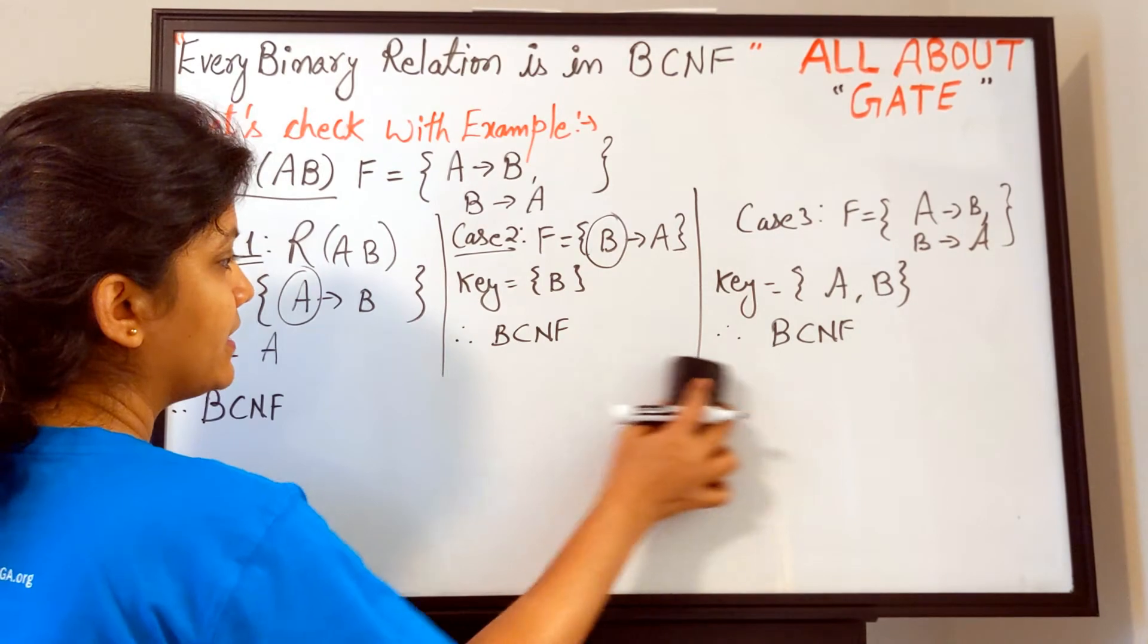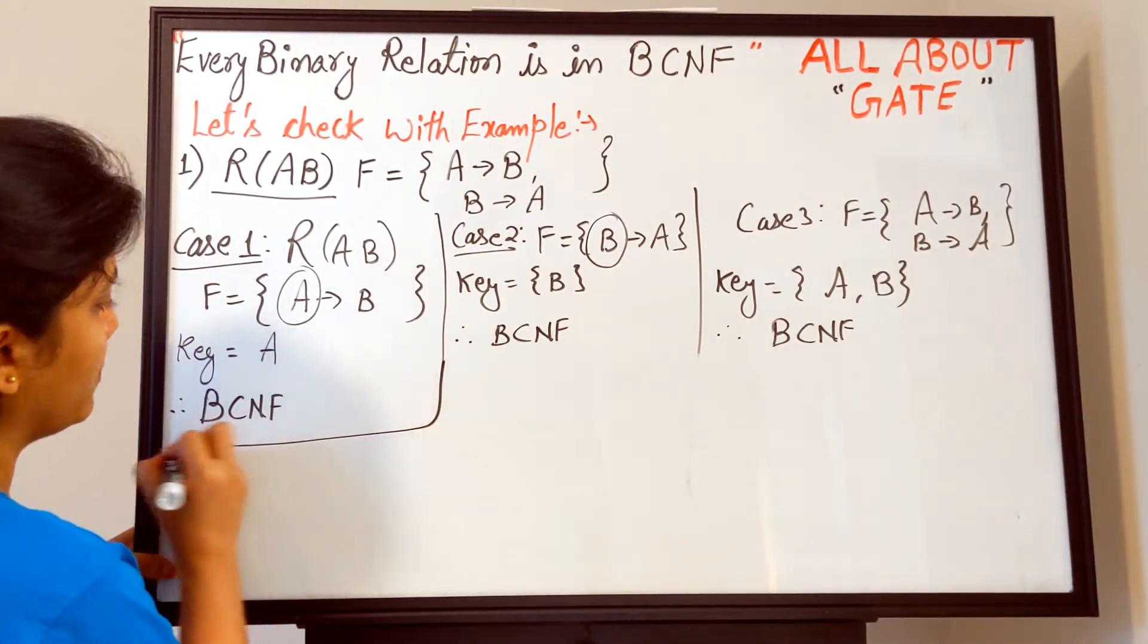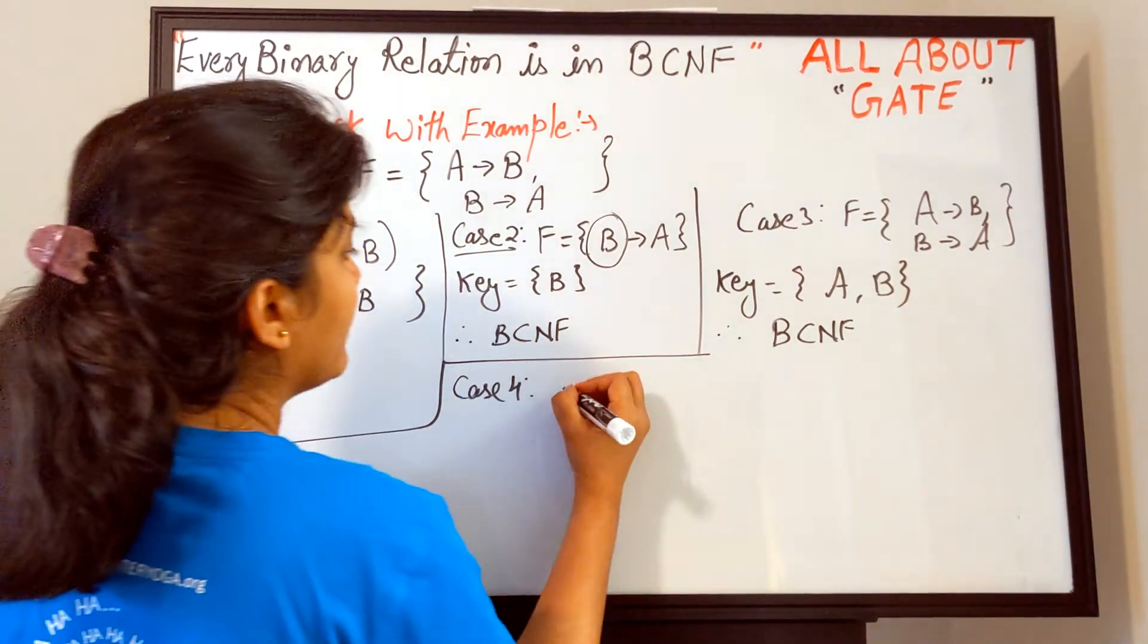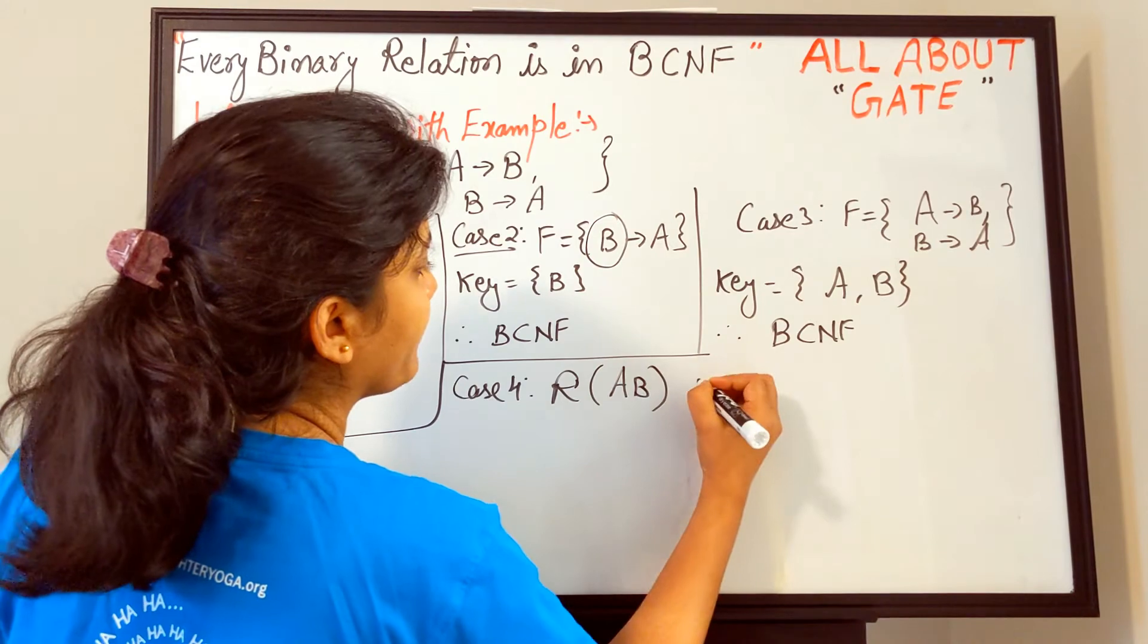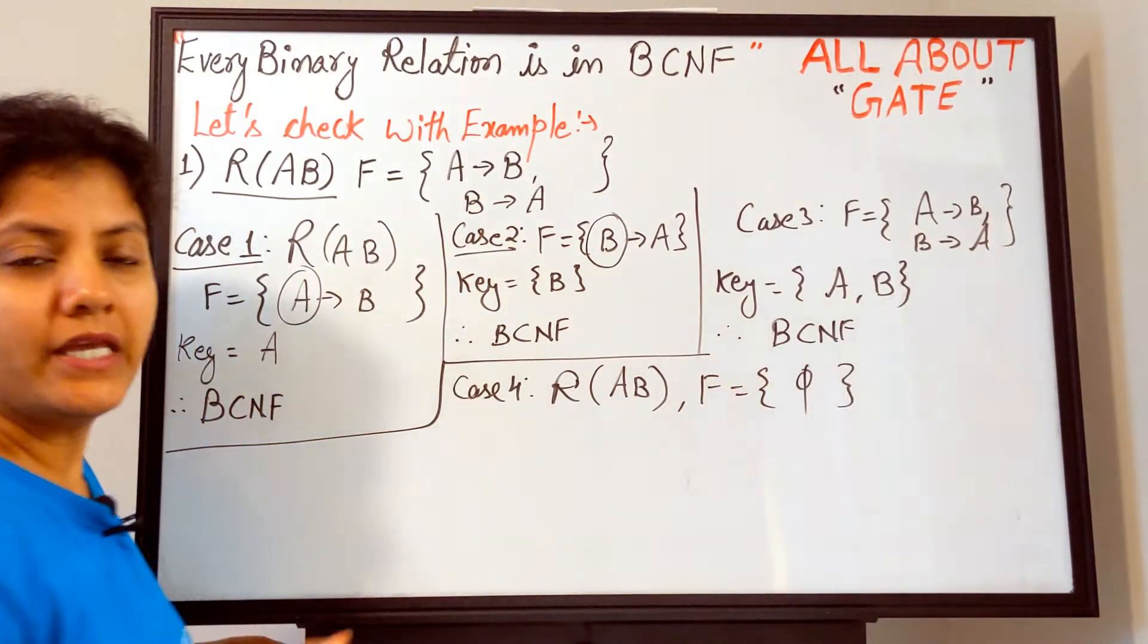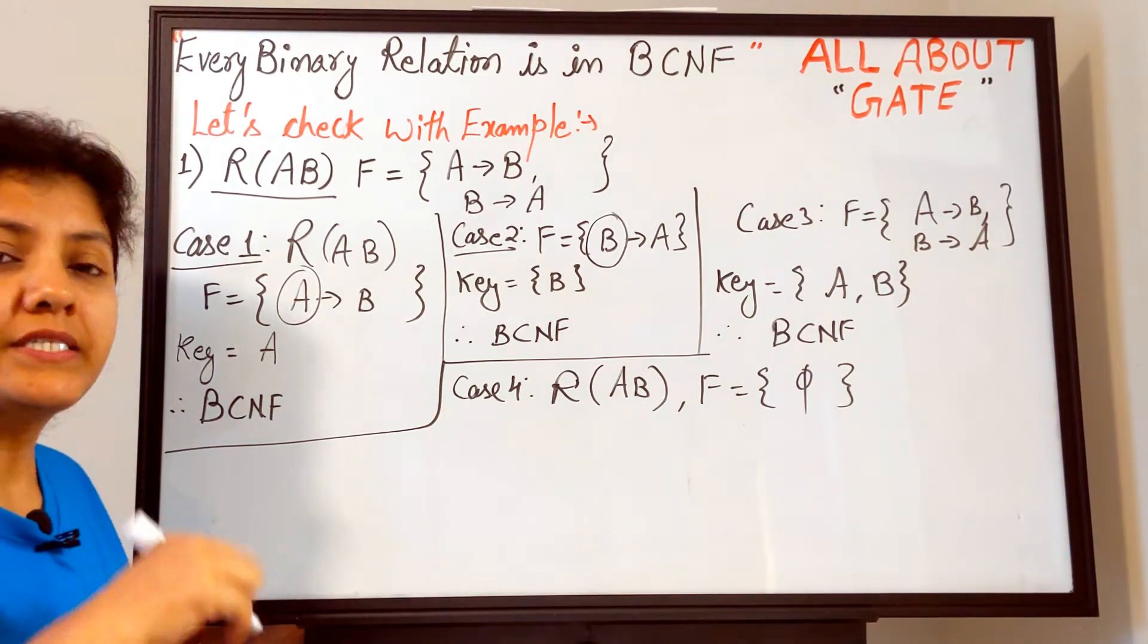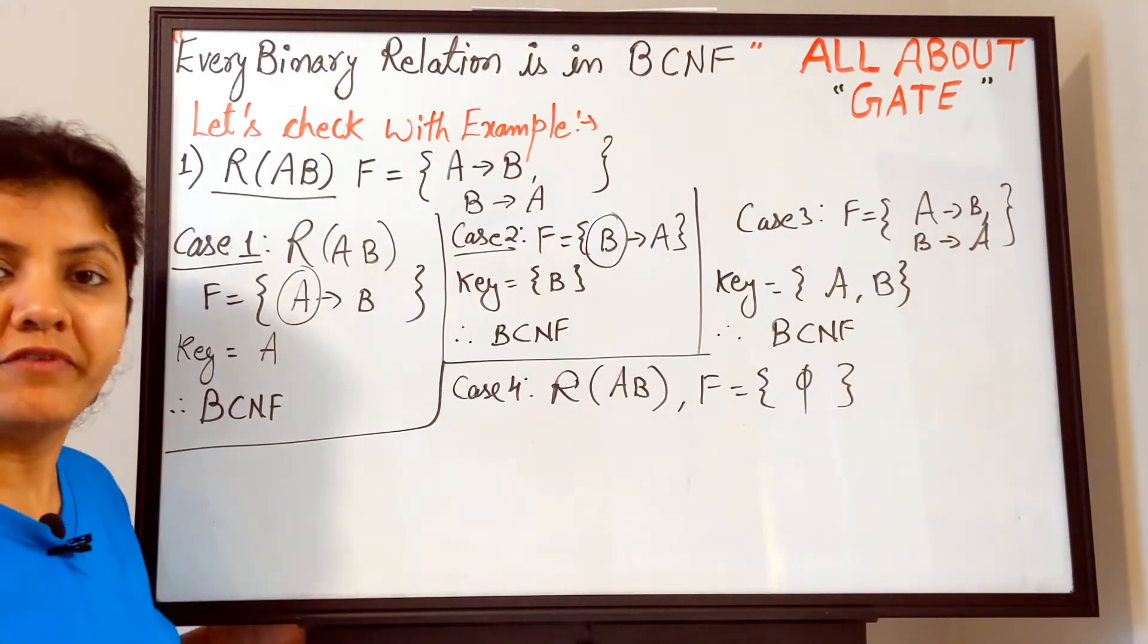Now the last case which is left out with us—let's take it up. Case four: the relation R is certainly AB, and functional dependencies set is empty. We have no functional dependency defined. There is no constraint defined by the designer. That means neither A determining the value of B nor B determining the value of A.